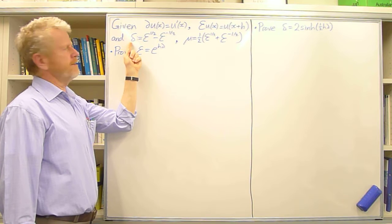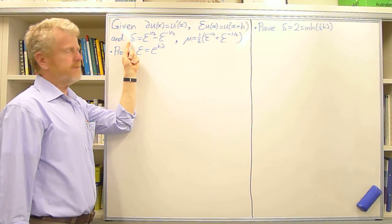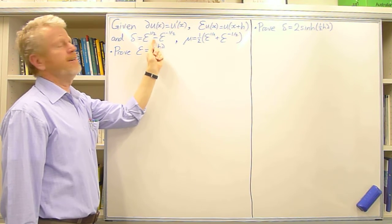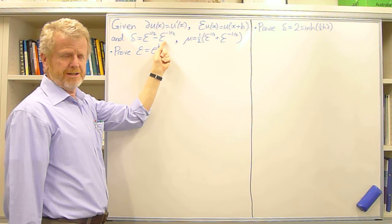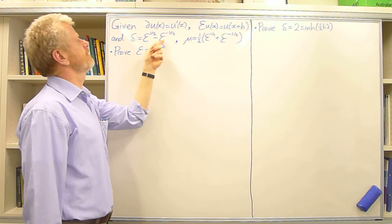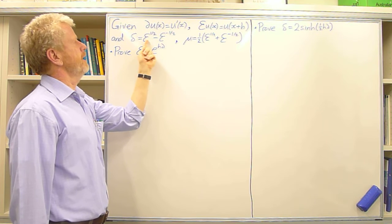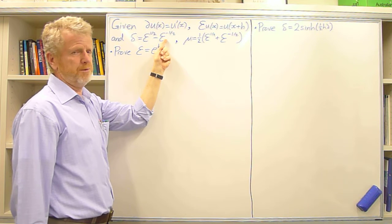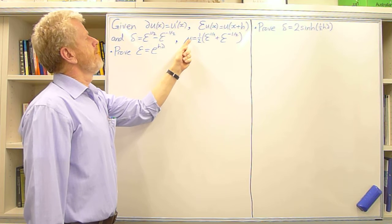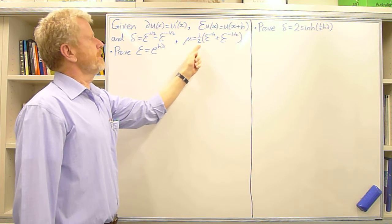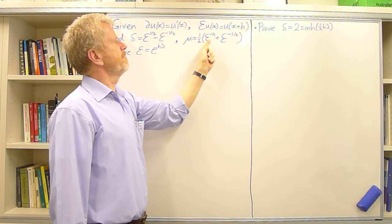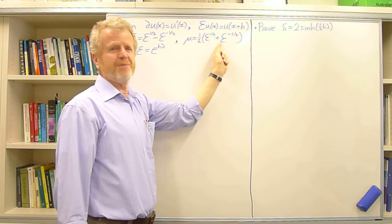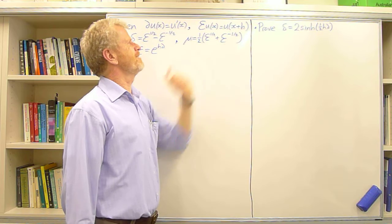Also, we're given the centre difference operator delta, which is E^(1/2) minus E^(-1/2), shifting by a half to the right and to the left. And the mean operator mu is a half of E^(1/2) plus E^(-1/2).